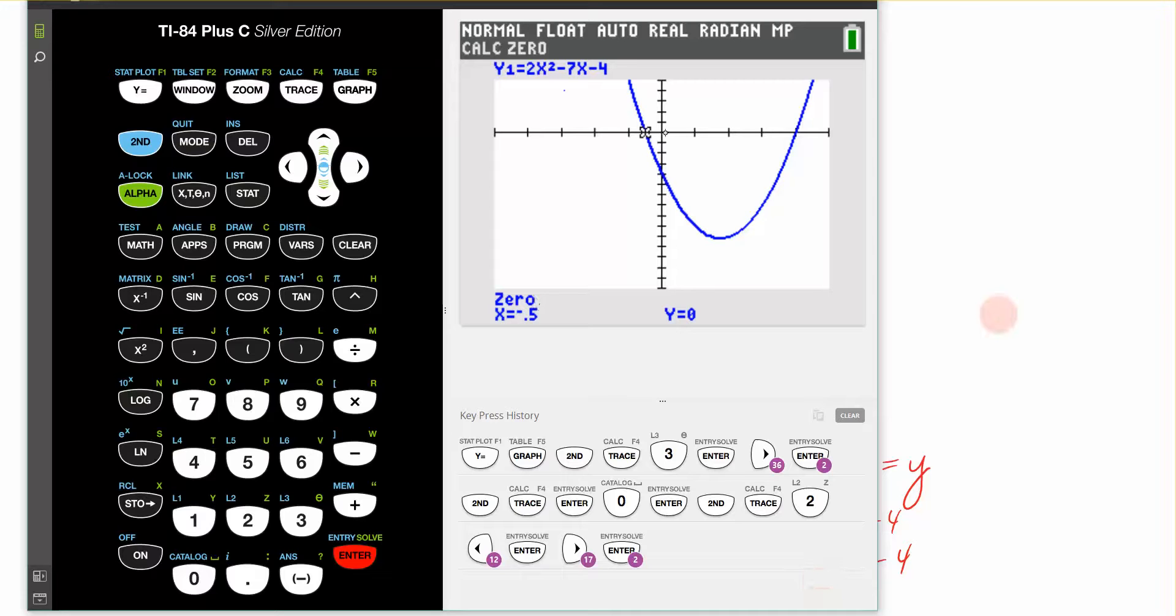And then you could do the same process again for this x-intercept that's over here. You just would move the arrow over and get it to be on the left side of your x-intercept, arrow again until you're on the right bound or the right side of your intercept, hit enter, and then enter one more time, and it will return that value. So that's how we are going to graph our quadratic when it's in the general form.